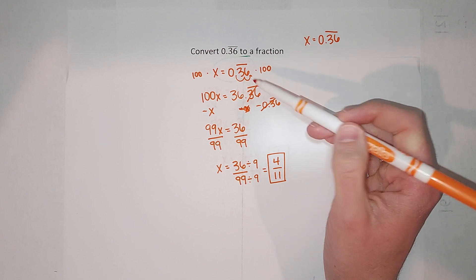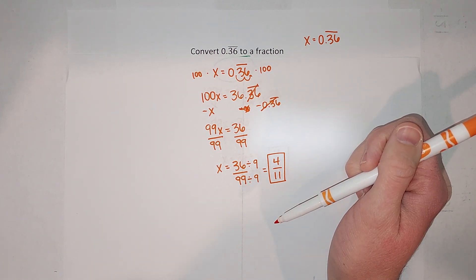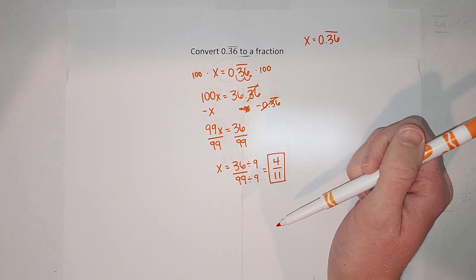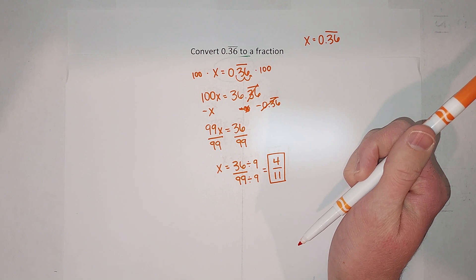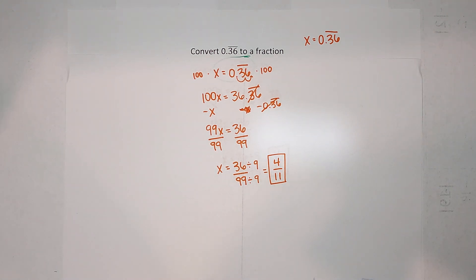So what you can do is plug this into your calculator: 4 divided by 11, and make sure you get 0.36 repeating. Now sometimes your calculator might round it because your calculator can't keep it going forever, but I think you'll get the idea when you plug it in. Hopefully that made sense and you can get your homework done. Bye!